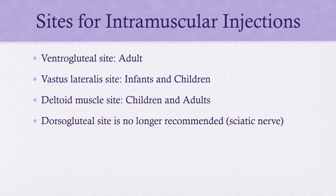These are the sites for IM injections that we'll look at in lab. The dorsogluteal site is no longer recommended — as of about 10 years ago, evidence showed it wasn't safe because of the location of the nerves; it was too easy to accidentally get the needle tip into a nerve root and cause undue pain and possible damage. We will focus on the other top three sites.